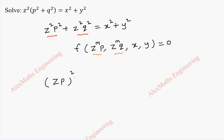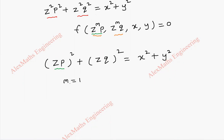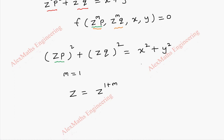It means p is not having any power — we have the whole square. And the same way, next is z into q, whole square, equal to x squared plus y squared. Now, comparing with z power m into p, we come to know the value of m, which is the power of z, is 1 here. Now, when m is other than minus 1, we go for the substitution which is Z equals z power 1 plus m.